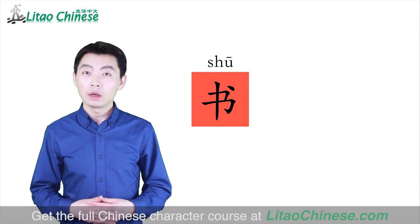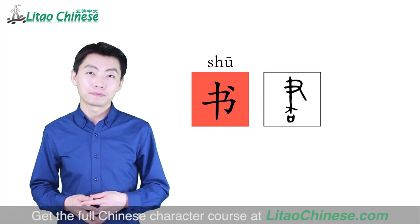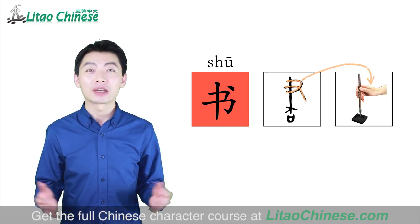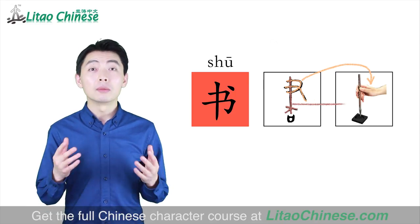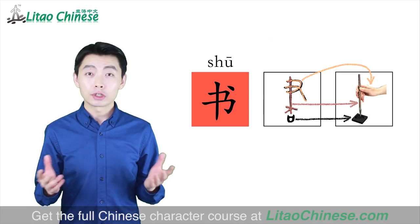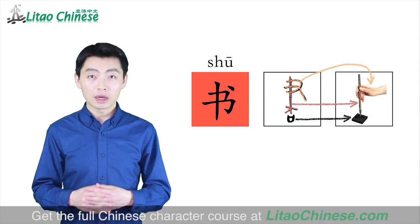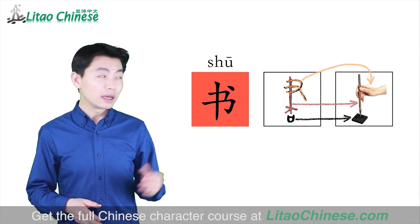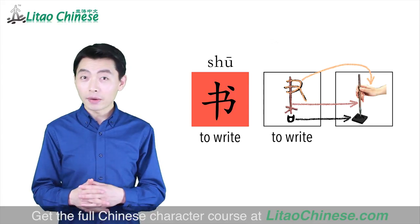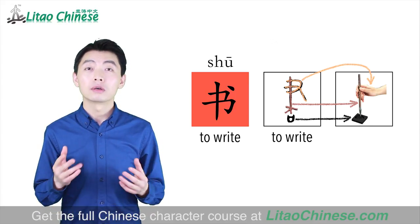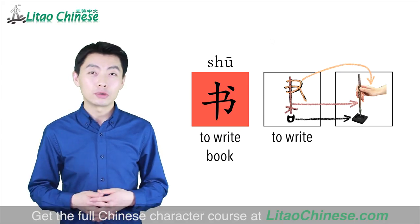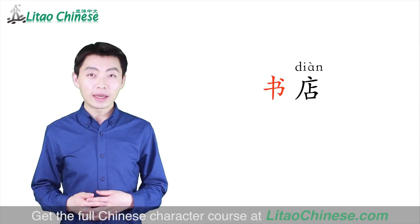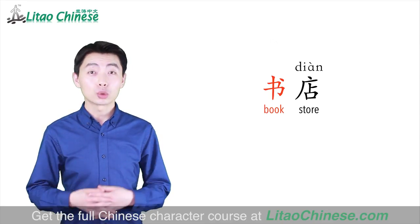This character is 书. Its ancient written form shows a hand at the top, which we have already seen in many ancient characters. This part represents a brush pen, and the bottom part refers to an ink stone. This character tells us that a person holds a brush pen and dips ink to write. So its original meaning is to write. The character 书 also means book, and this meaning is more commonly used now.